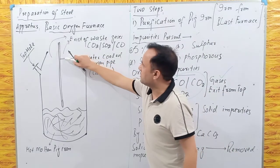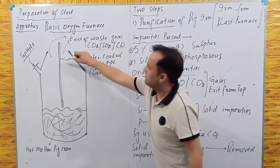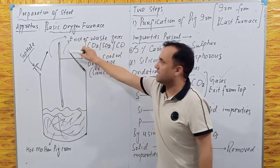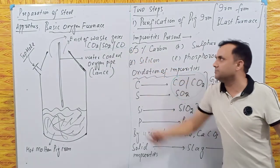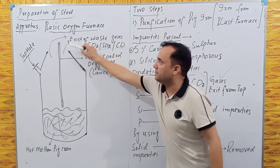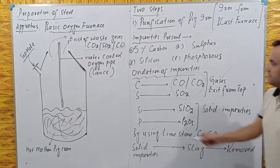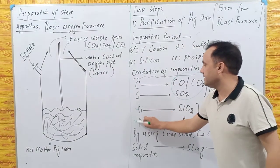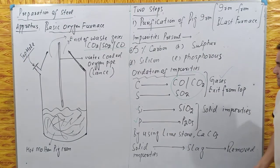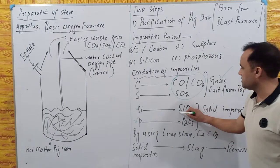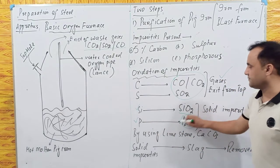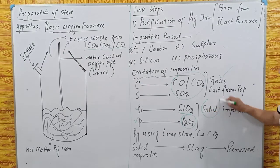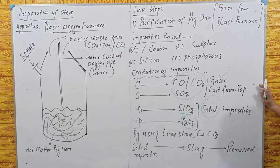Since carbon monoxide, carbon dioxide, and sulfur dioxide are gaseous, they exit from the top of the furnace. The remaining impurities — silicon and phosphorus — are also oxidized: silicon becomes silicon dioxide and phosphorus becomes phosphorus pentoxide. Both of these are in solid form.